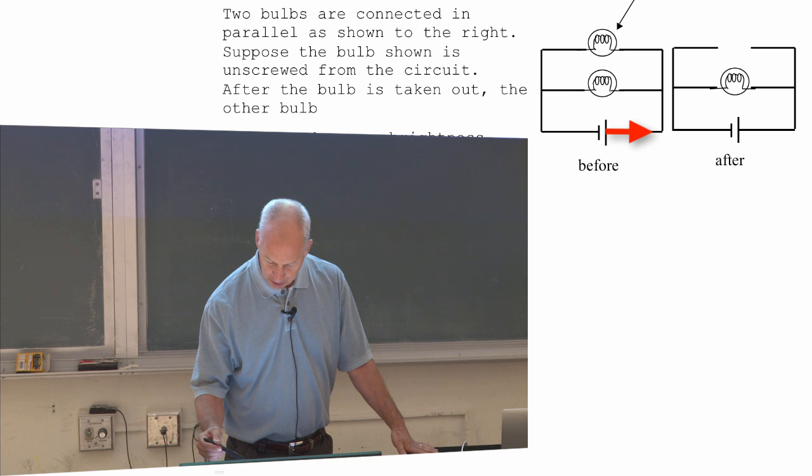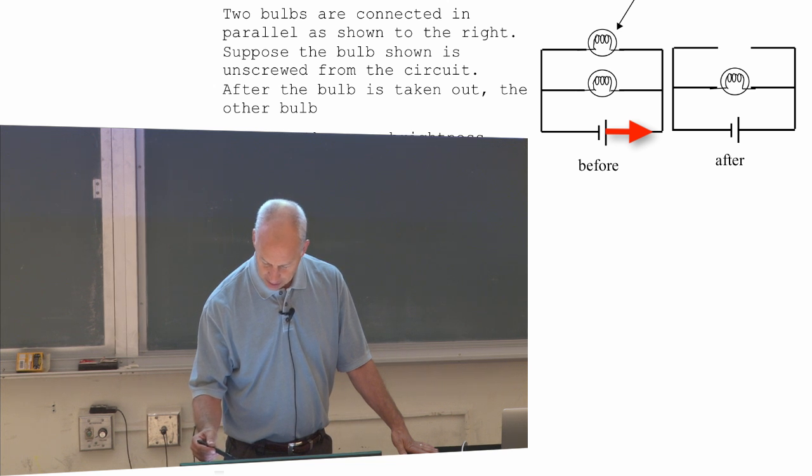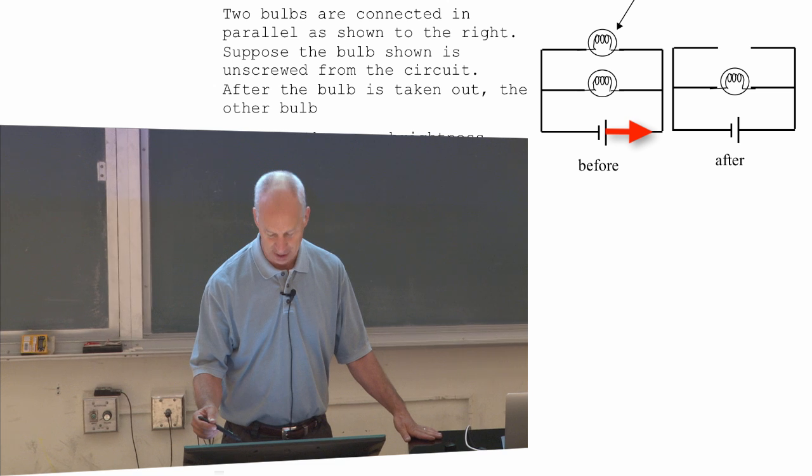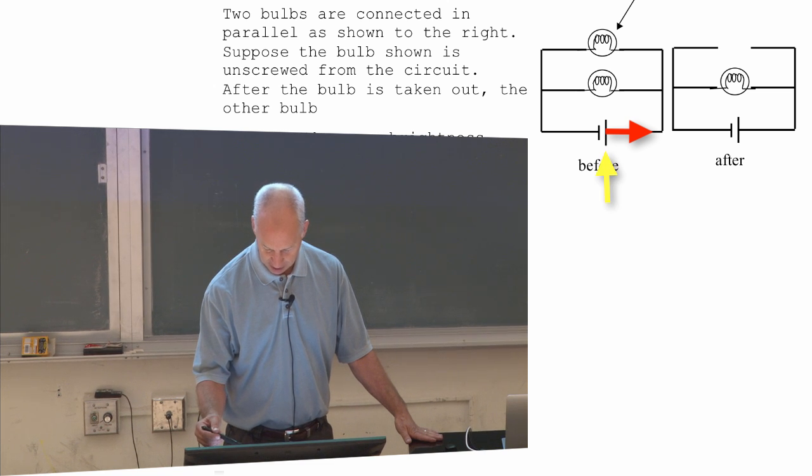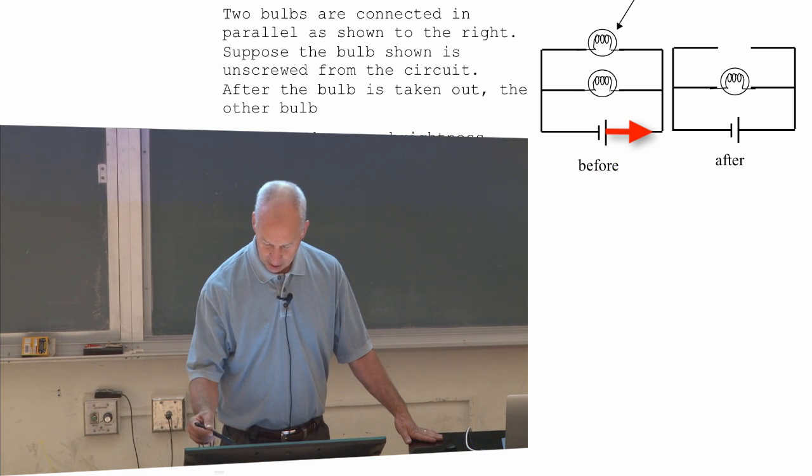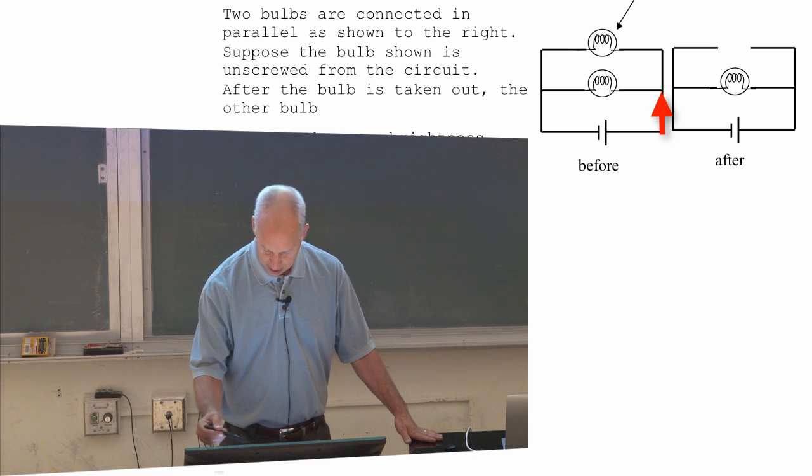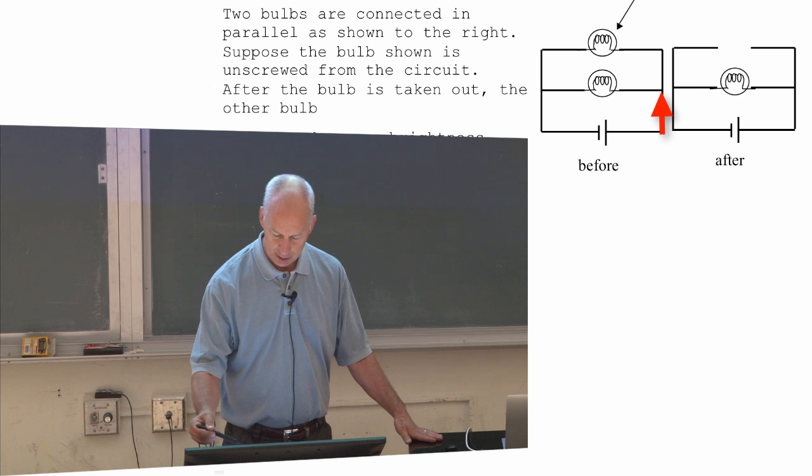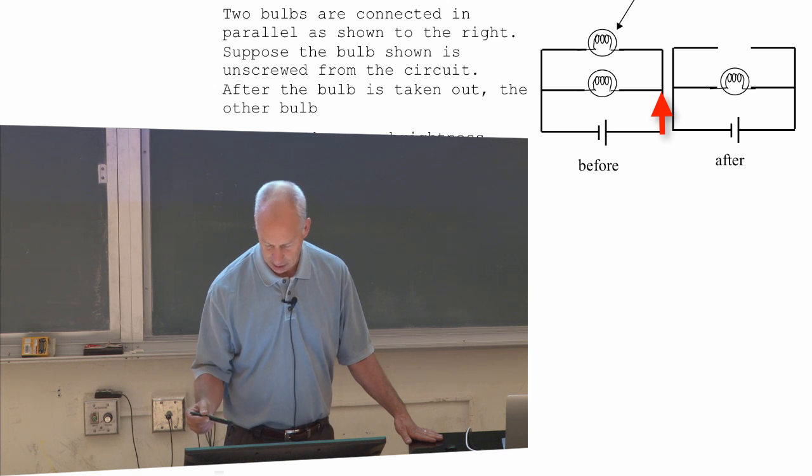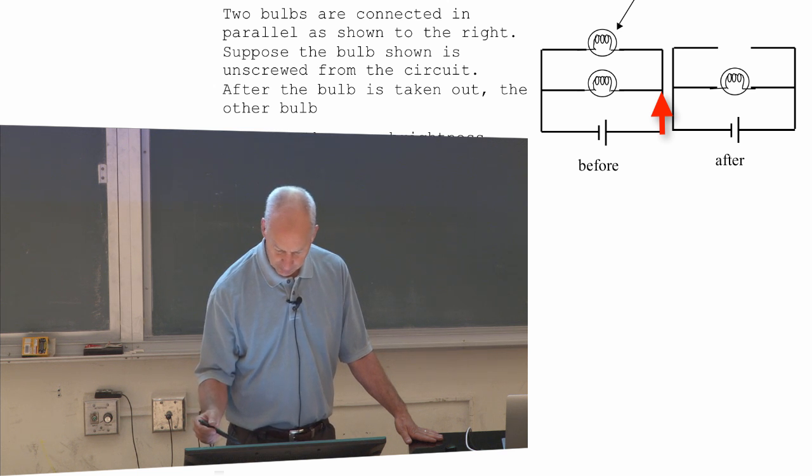The current through here, through the battery. Current, by the way, we define from positive to negative. So here's the positive side of the battery. Current's gonna flow out of here, through there. And so it's gonna be flowing counter-clockwise around this picture right here.